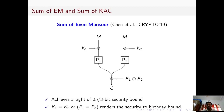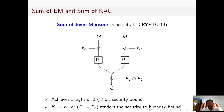This line of research started with the work of Chen et al., with their popular constructions called the Sum of Even-Mansour construction (SoEM) and Sum of Key-Alternating Ciphers (SOKAC). These two constructions were proposed in Crypto-19. The SoEM construction takes two independent permutations and two independent n-bit keys and XORs the outputs of P1 and P2. This construction achieves a tight 2n/3-bit security bound, with a corresponding matching attack. However, if the two permutations are made identical or the two keys identical, the resulting construction can only give birthday-bound security.